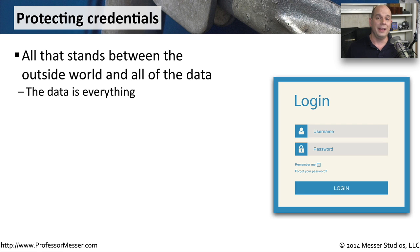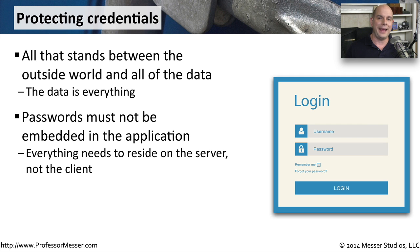We want to protect login credentials at all costs — it is this username and password that gains access inside your network, and we want to make sure only authorized people get access to those resources. One way to protect against unauthorized access is to protect both the username and the password. At no time should you embed this information within the application itself. If you could just walk up to a machine and it automatically logs in for you, that means the username and password are being saved somewhere in your system. If possible, store those credentials only in your brain and not in any type of automated system.